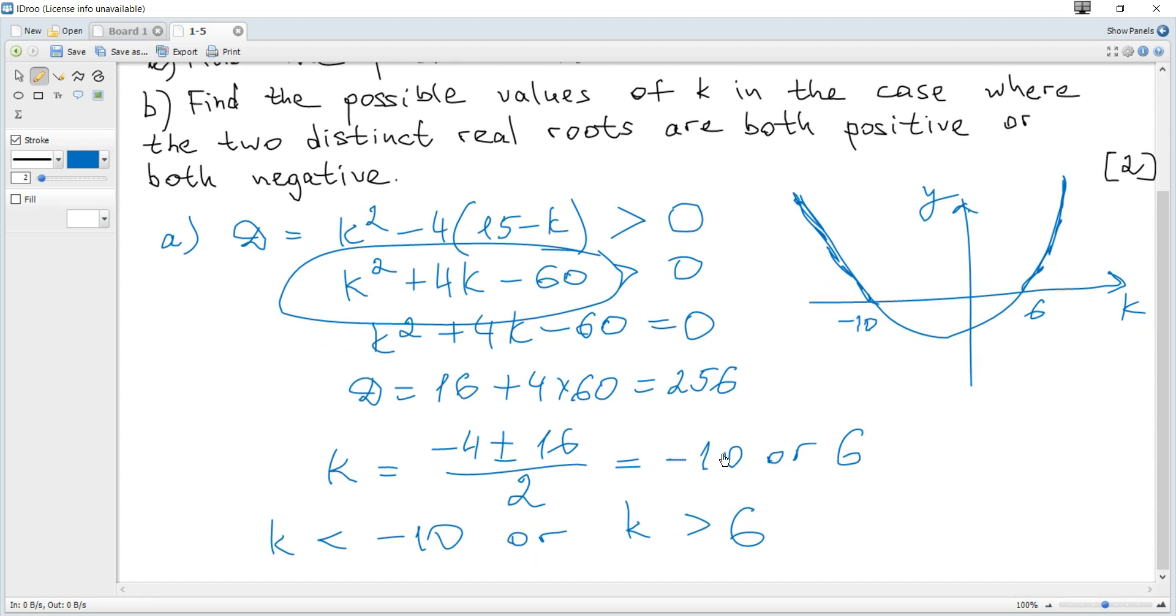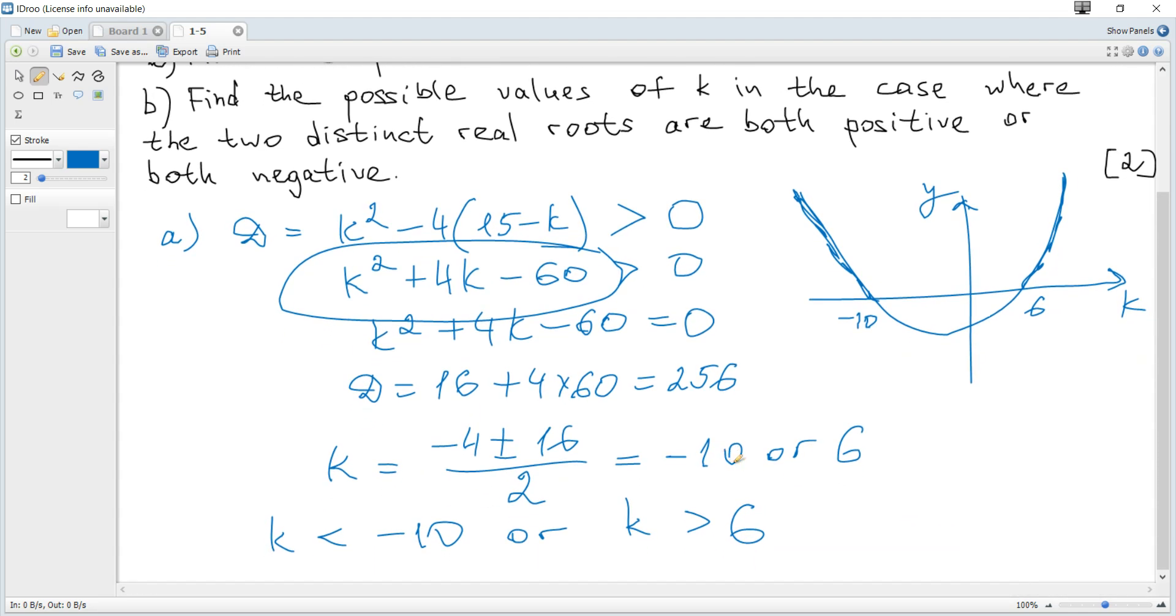Question B: Find the possible values of k in the case where the two distinct real roots are both positive or both negative.